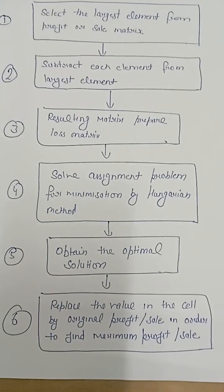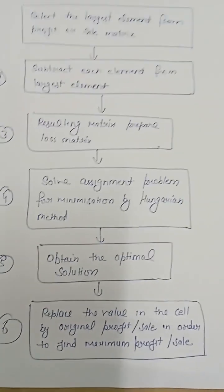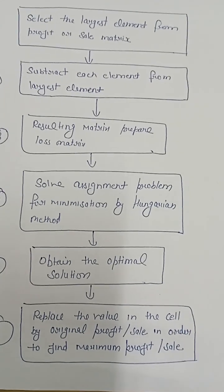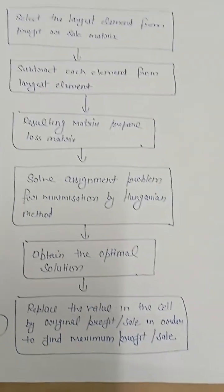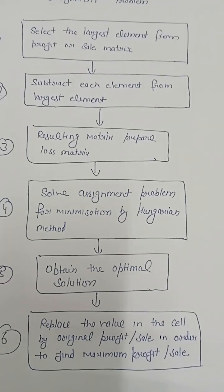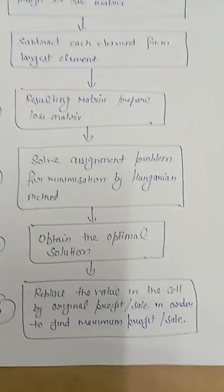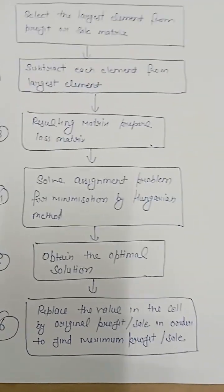For the assignments obtained, we put the actual values from the original profit matrix or sale matrix, and then we place those values accordingly. After that, find out the total sale, your maximum sale or maximum profit.